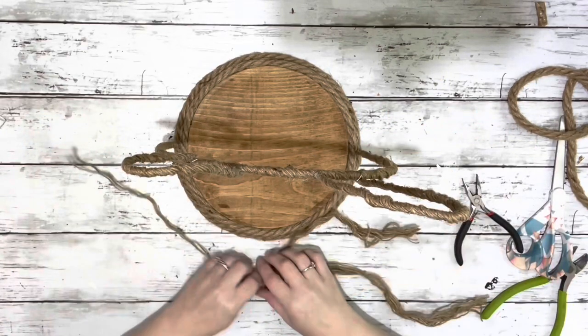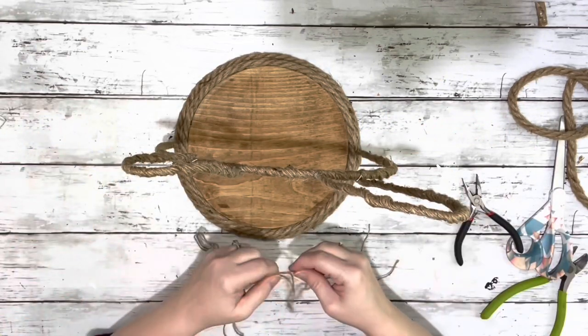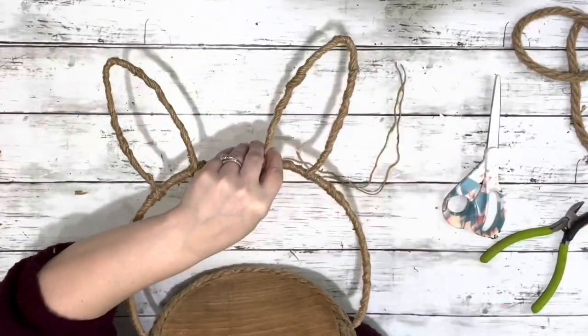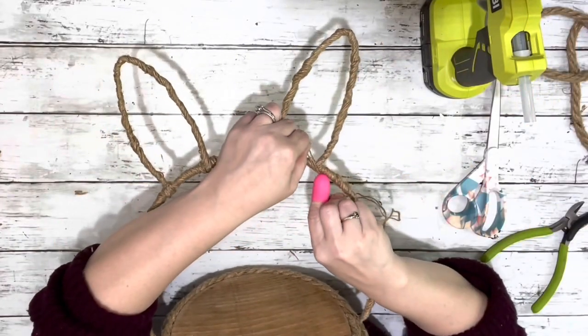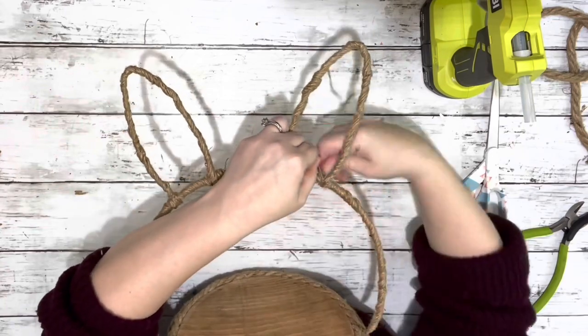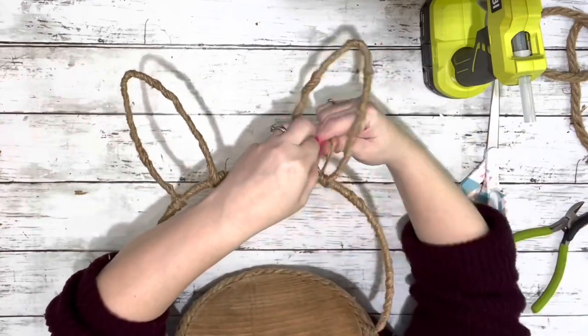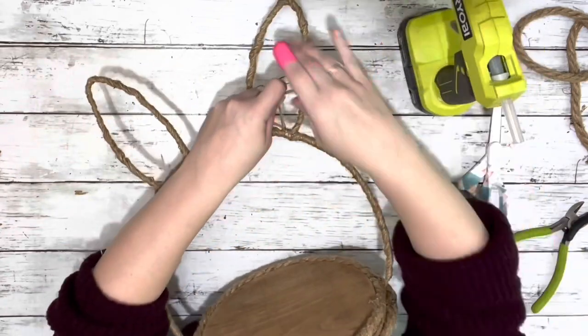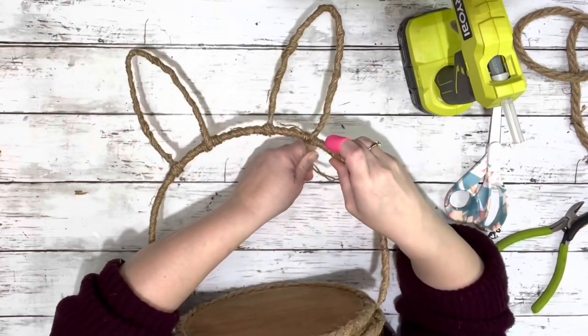Then I needed to cover those wires, so I took a piece of the twine from the rope that I had pulled apart and just hot glued that and wrapped it around where both of the ears connected, just to get that wire that I wrapped around nice and covered.